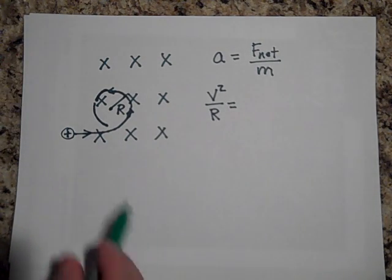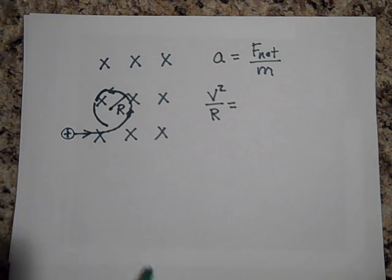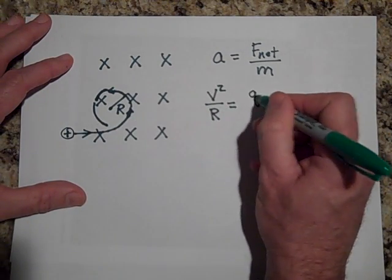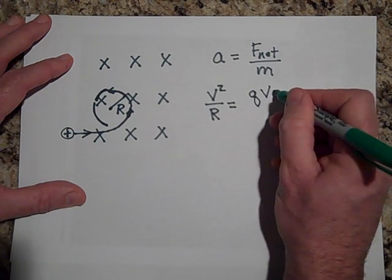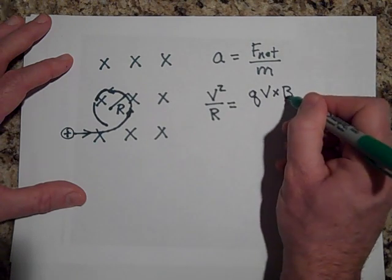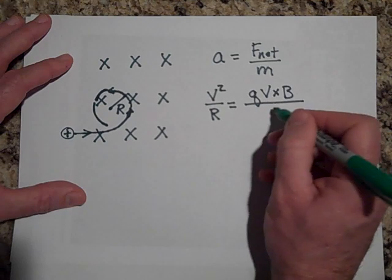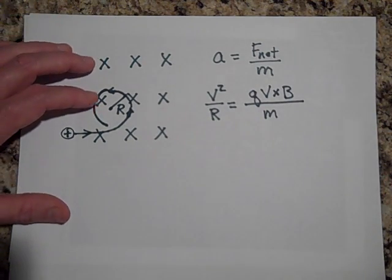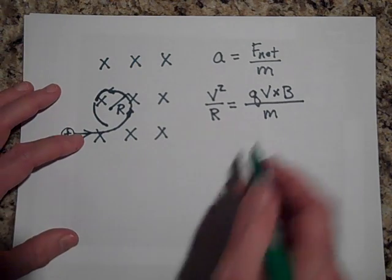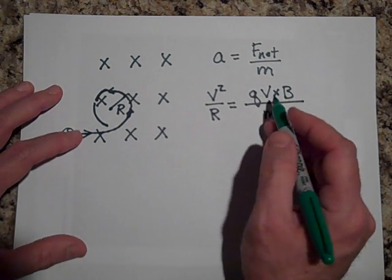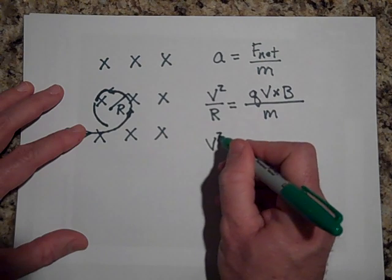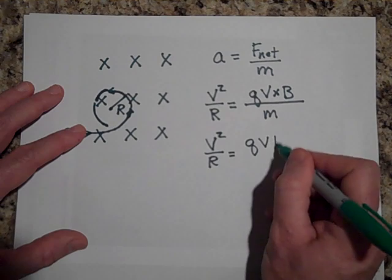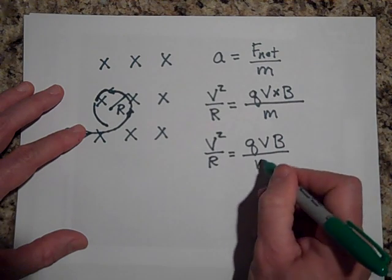And since it did enter perpendicularly, I'm going to say that the only force on this right now is Q V cross B. And then divide it by m. The net force is the magnetic force. Well, if these are perpendicular to one another, this can just be simplified to v squared over R is equal to Q V B all over m.